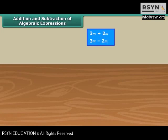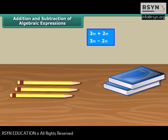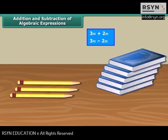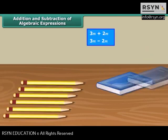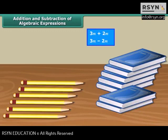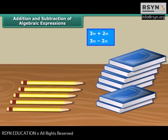We can only add or subtract like terms. Think of it like this: on a table, we have three pencils and two books. We cannot add the three pencils to the two books because they are not the same kind of objects. If we get another three pencils and five books, altogether we have six pencils and seven books — but we still can't combine these different objects. Similarly, if we remove one pencil from six pencils, we are left with five pencils, but still have seven books. It's quite similar with algebra — we can only add or subtract similar objects.